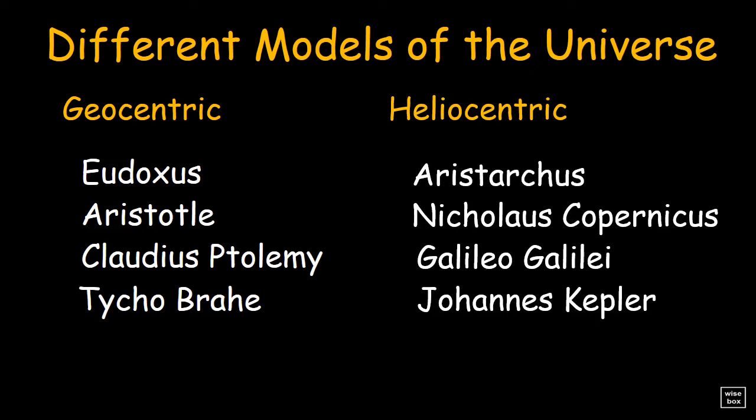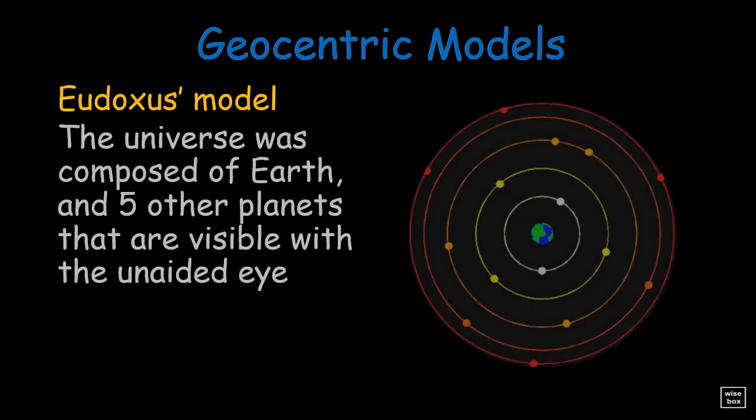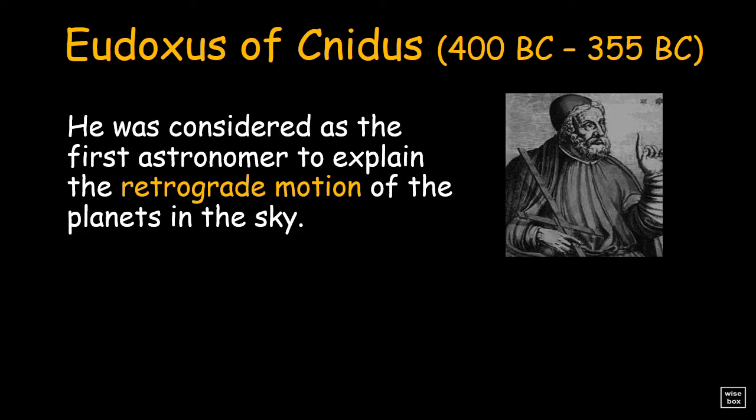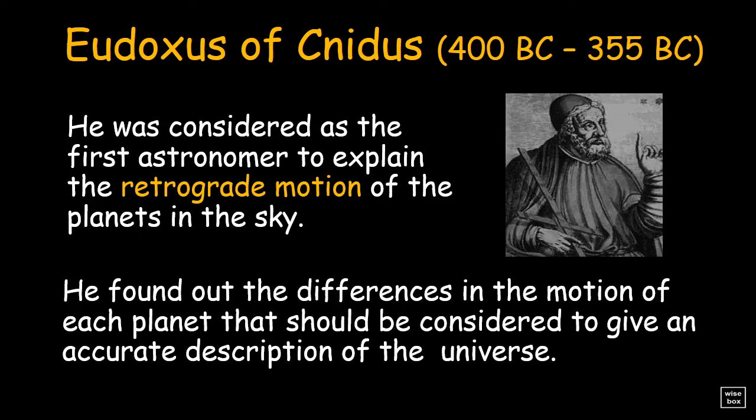For Eudoxus, the universe was composed of the Earth and five other planets that are visible with the unaided eye, namely Mercury, Venus, Mars, Jupiter, and Saturn. He was considered as the first astronomer to explain the retrograde motion of the planets in the sky. Also, he found out the differences in the motion of each planet that should be considered to give an accurate description of the universe.